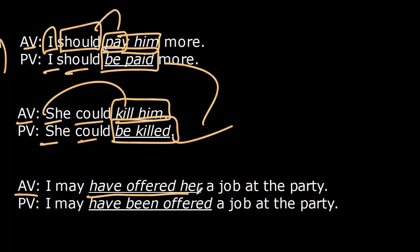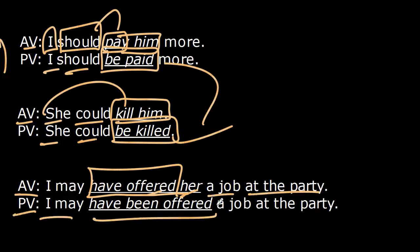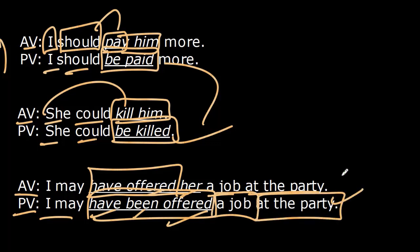For the perfect bare passive infinitive: Active: 'I may have offered her a job at the party.' Passive: 'I may have been offered a job at the party.' Here I received the action — somebody offered me the job. 'Have been offered' is the perfect passive infinitive after the modal 'may.' The doer is not mentioned.